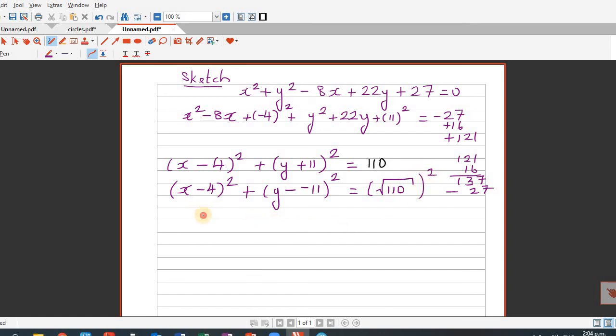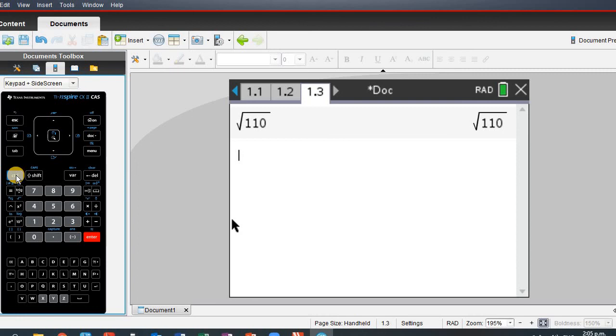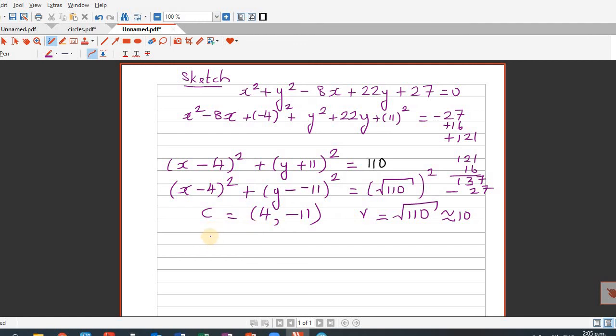Writing the standard form, the center is 4 comma minus 11 and the radius is square root of 110 which is approximately 10 point something. Let me get my calculator - 10.5, so roughly it is 10.5. The center is 4 comma minus 11 and the radius is 10.5 in 1 decimal place. Here you can find the x-intercept and y-intercept but that would be lots of calculation.